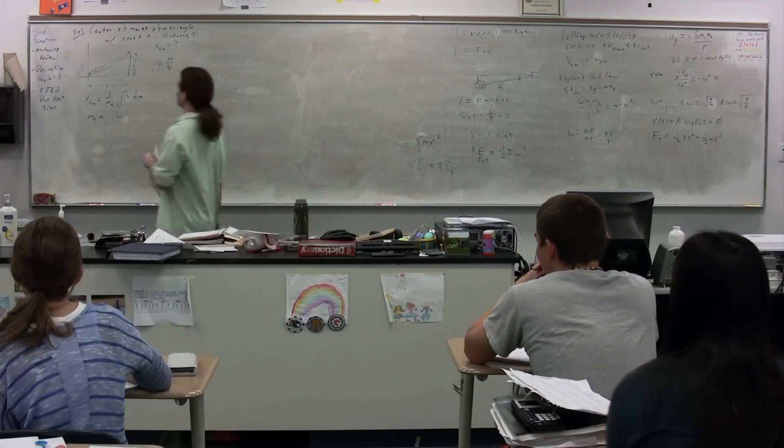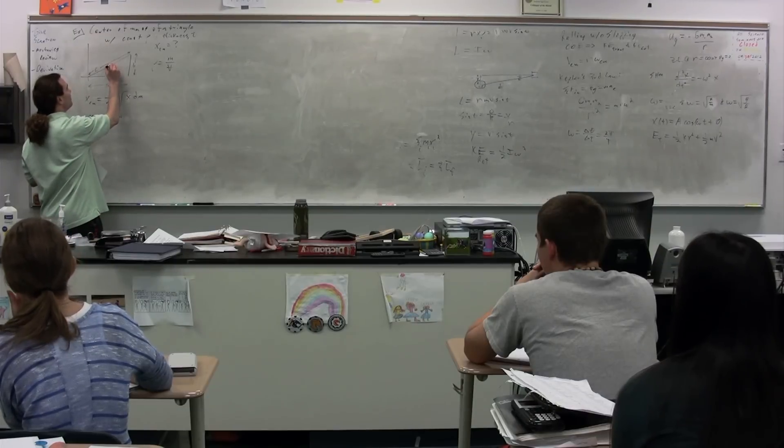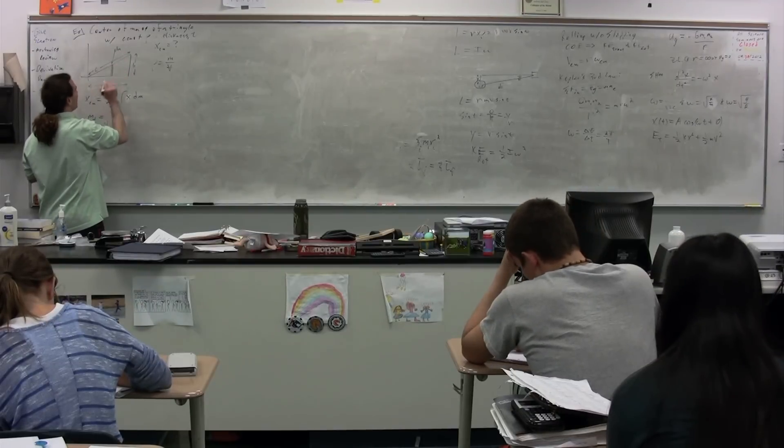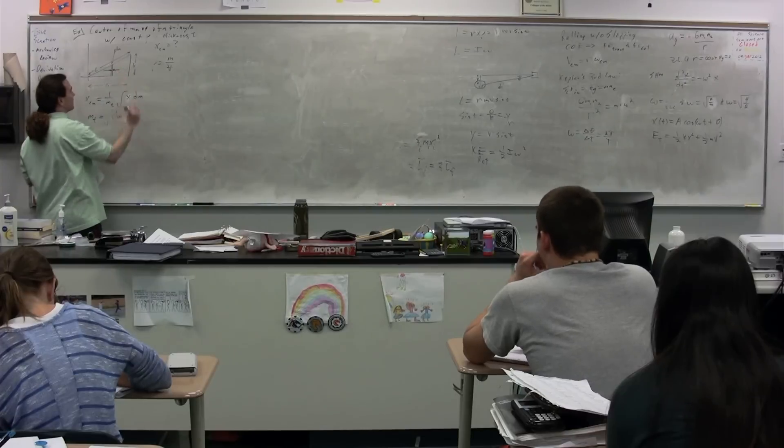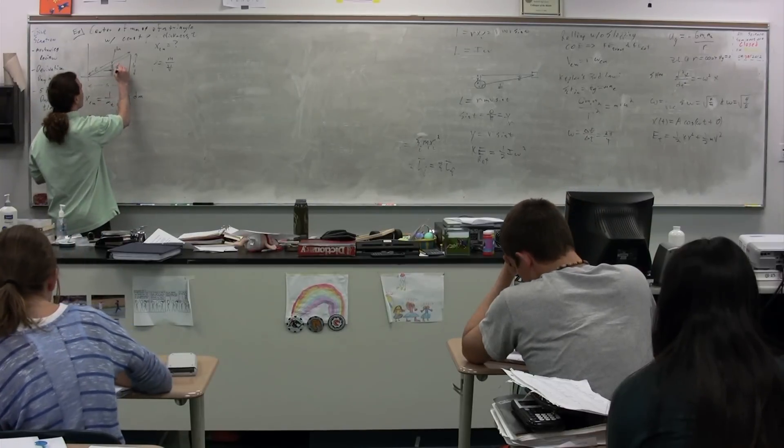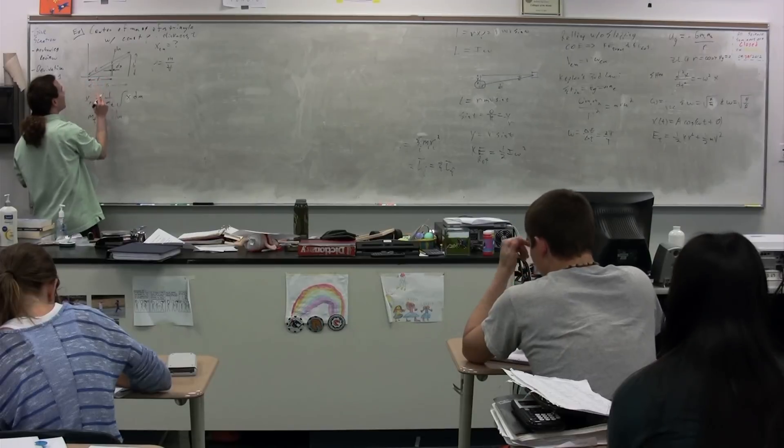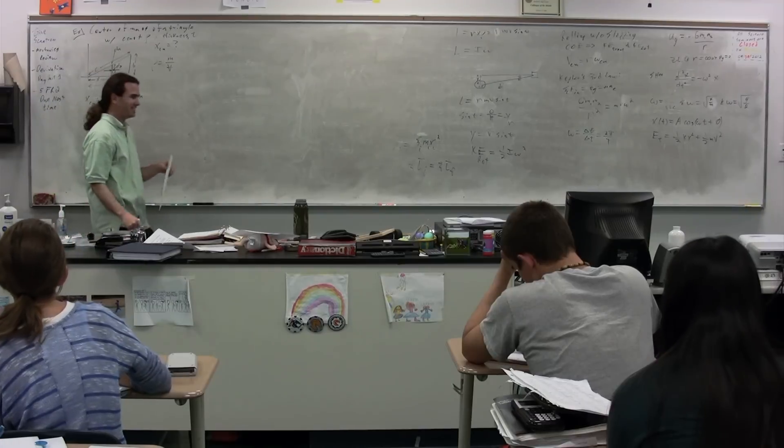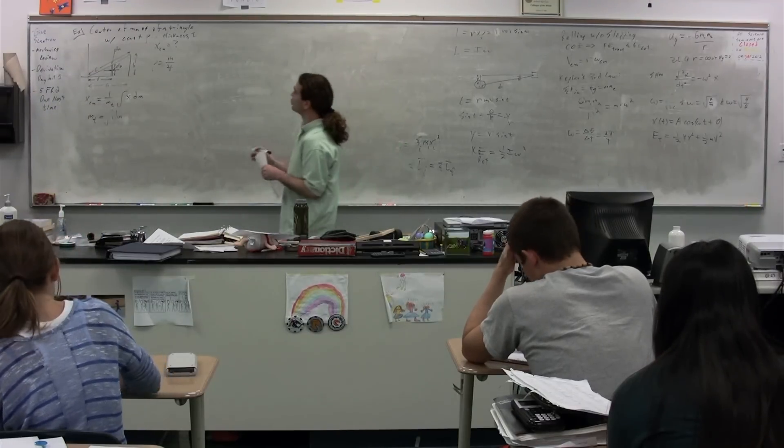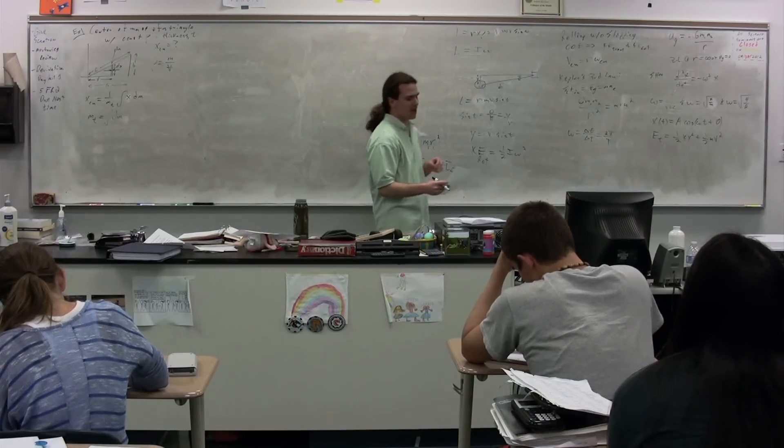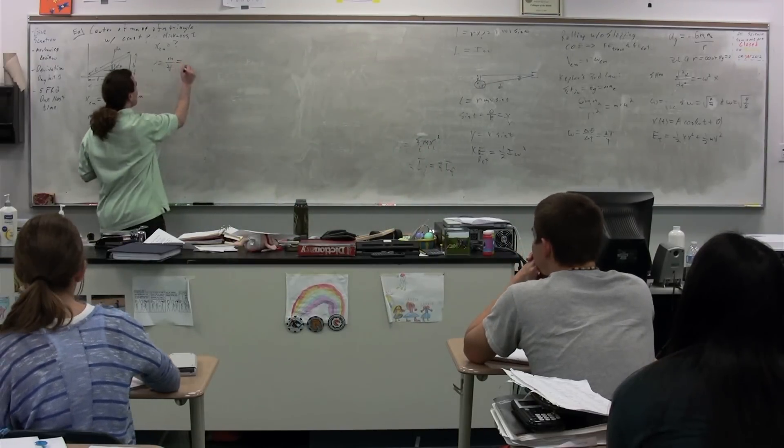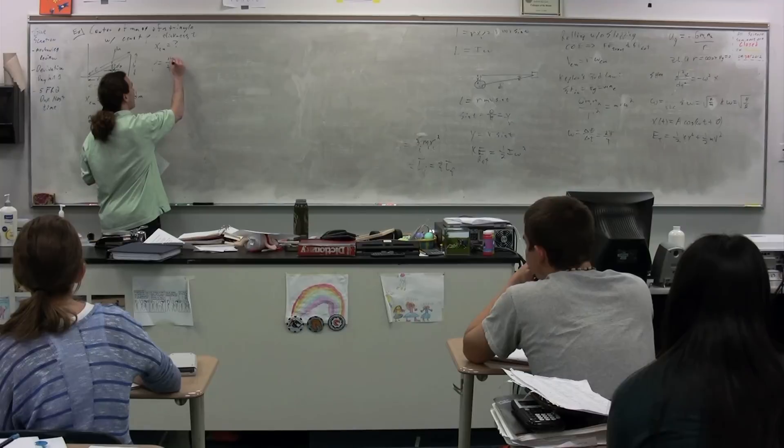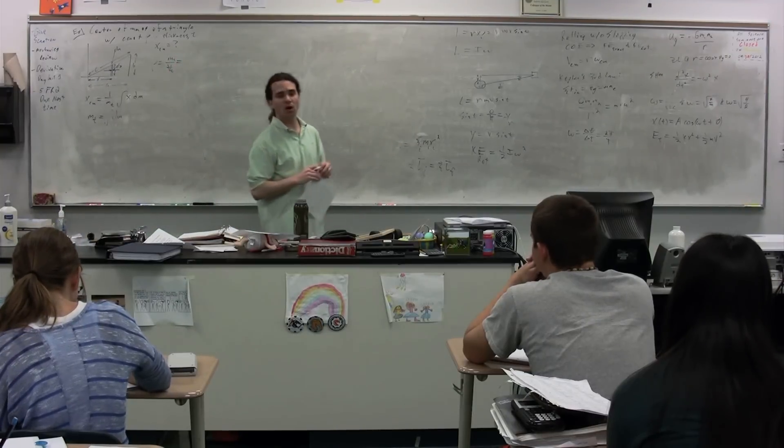Class, what is the width of this little piece here? Dx. Notice it is located at the distance x from the origin here, and it has a height y and a thickness t. Notice that dm has a shape of a rectangular box. Therefore, the volumetric mass density, which is equal to mass divided by volume, I'm going to specify here, this is the total mass divided by the total volume, is also equal to...